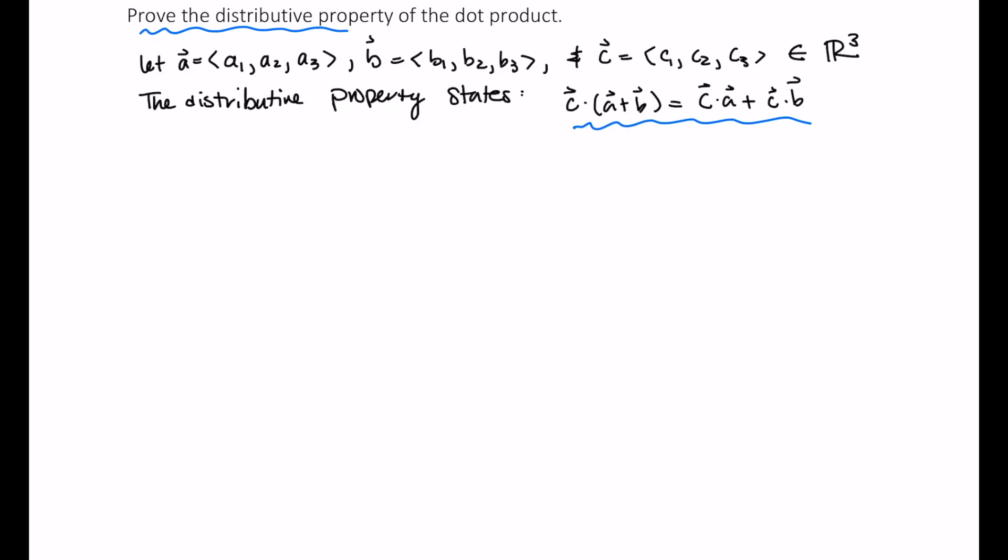Okay, so let's begin with what we have on the left-hand side, that is C dot vector A plus B. And let's rewrite these using the definitions of each of these vectors.